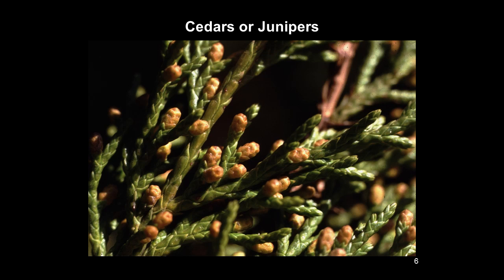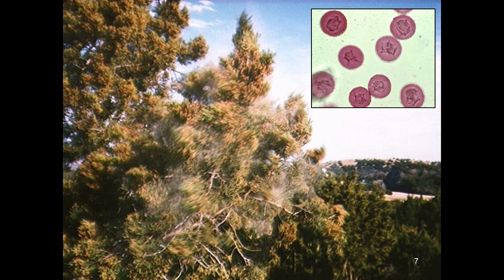We have another type of plant here, and this is cedar or juniper. This is not a flowering plant — it's a cone-bearing plant, like pine. Cedar produces large numbers of pollen in very small cones. You can see the small male cones. Cedars are well known for producing large numbers of pollen. Here's a cedar tree, and you can see the cloud of pollen issuing from it. In the inset, in this photo and the others, you see the pollen grains, and they've been stained to make them easy to see under the microscope.